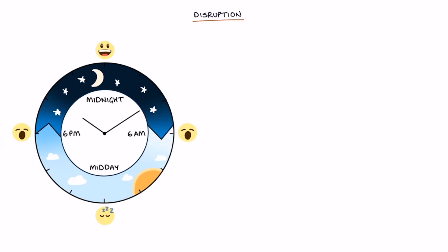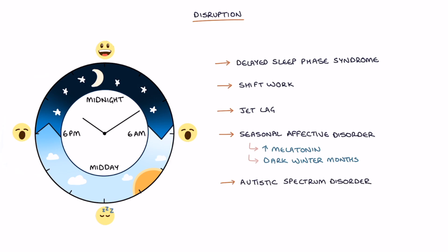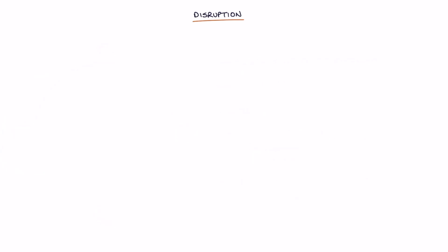Let's talk about disruption. Disruption to melatonin and the circadian rhythm may occur with delayed sleep phase syndrome or DSPS, shift work, for example variable working hours between night and day shifts, jet lag, seasonal affective disorder potentially involving increased melatonin during the dark winter months, and autistic spectrum disorder, which may be associated with low melatonin levels. Melatonin levels decline with increasing age.